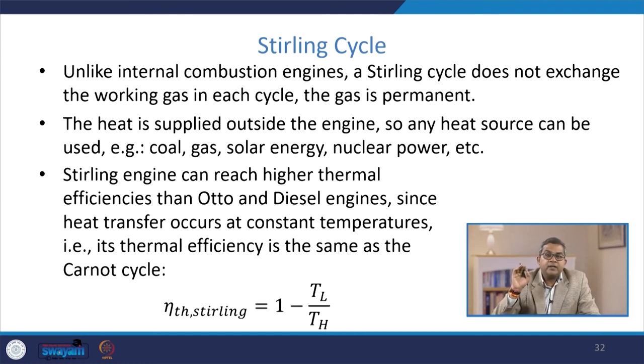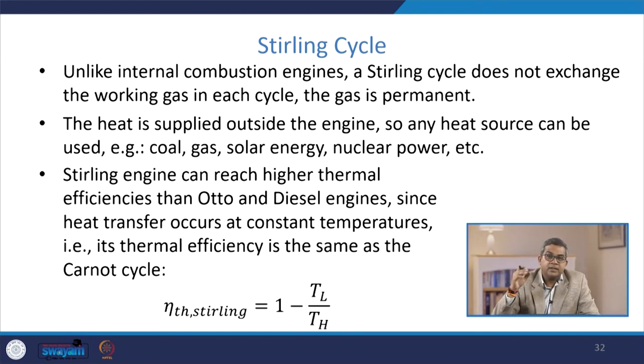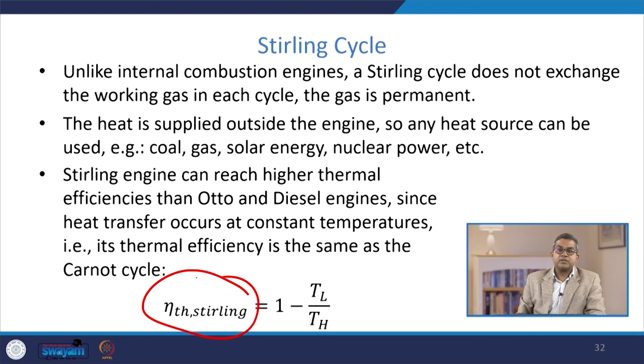A Stirling engine can reach higher thermal efficiencies than Otto or diesel engines. Since heat transfer occurs at constant temperature, its thermal efficiency is the same as the Carnot cycle: η = 1 − TL/TH. The pressure changes are very smooth and torque is uniform. It has no valves or exhaust pipe, making the Stirling cycle quiet and requiring less maintenance—in other words, quite economical.